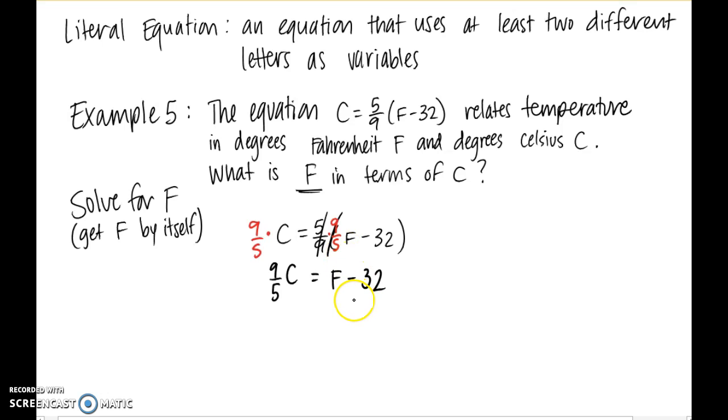From there, it's just one basic step to get rid of that negative 32. We're going to add 32 to both sides, and we get F equals 9/5 C plus 32. So that is our final answer. We found F in terms of C. This equation would be useful to convert Celsius to Fahrenheit.